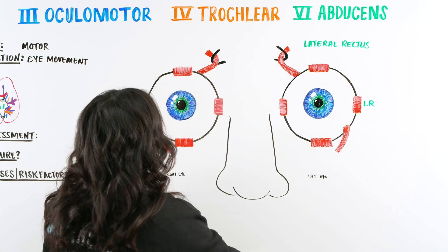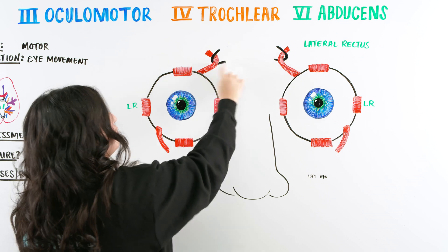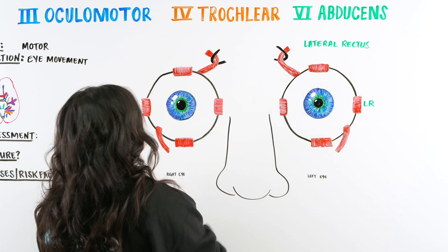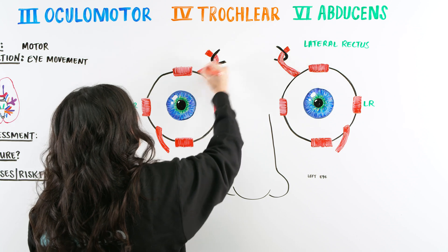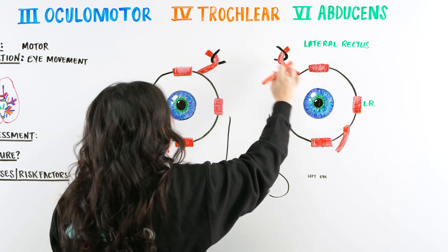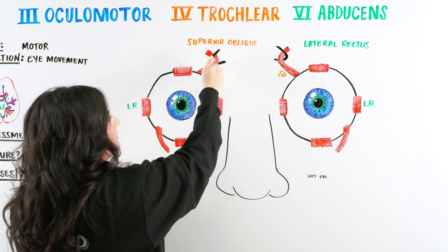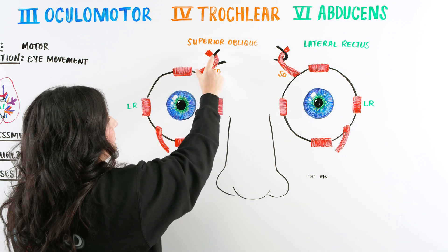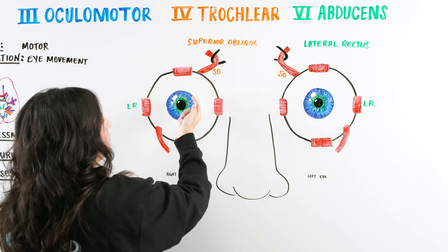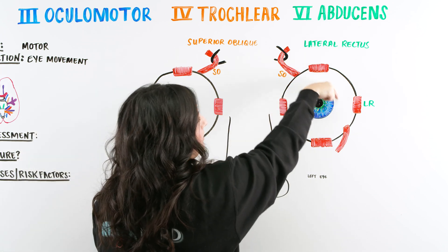Cranial nerve four, the trochlear, is one of the easiest ones to understand because we have this little hook where the muscle is coming through — this is the trochlea. The muscle that the trochlear works with is our superior oblique. We can see the muscle as it's coming through this little opening and as it contracts, it's going to pull the eye, allowing it to look laterally and down. Same thing on the other side — lateral and down.